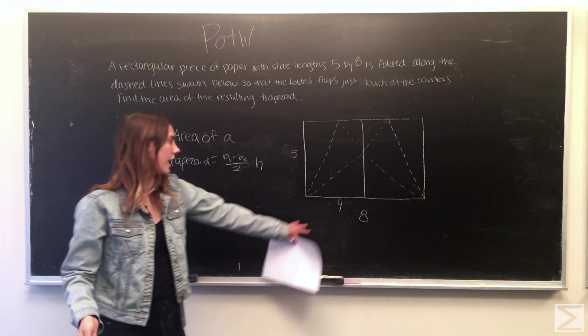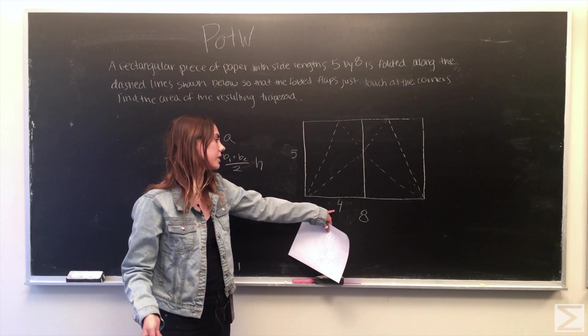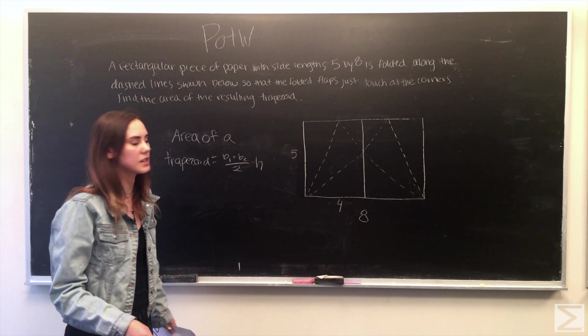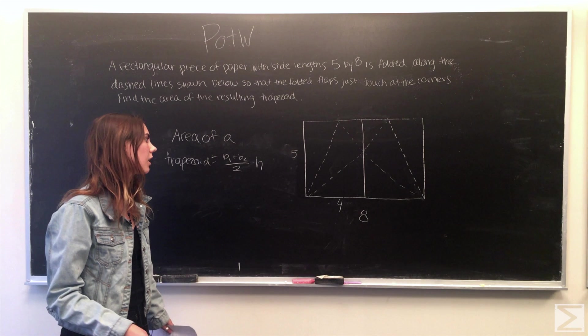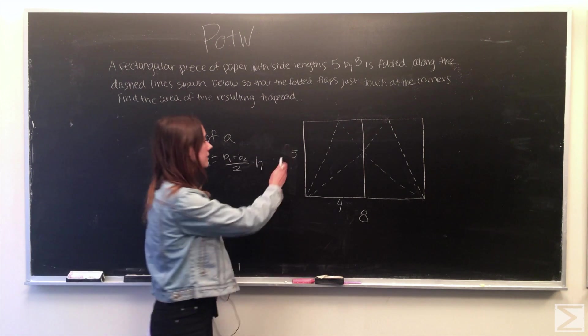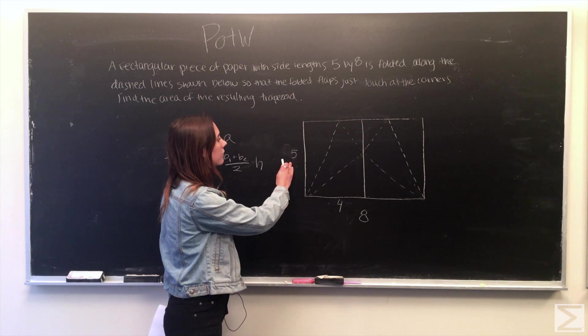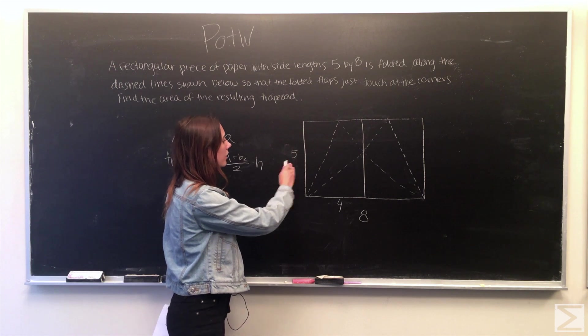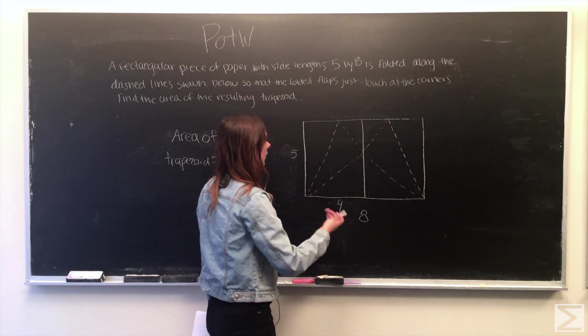Now we know that by bisecting the base this part is 4 and we can also see from the folding in of the paper that this is actually the reflection of the height of the paper over this line, this fold.